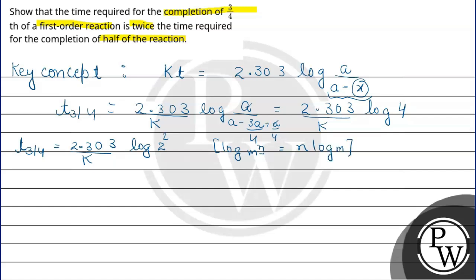Basically, it will be equal to 2.303×2/K log(a/(a-a/2)). So it is equal to 2.303/K log(a/(a/2)), which is a/(a/2). The 2 will move up, so it becomes 2.303/K log 2.